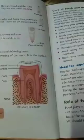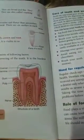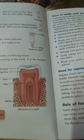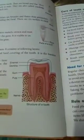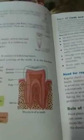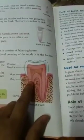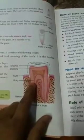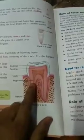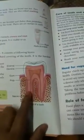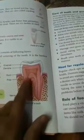Below that we have dentine — you can see it in the drawing. It is a bone-like layer below the enamel and it is softer than the enamel. And then we have the pulp — you can see it here. It is the central part of the tooth. It is soft and contains blood vessels and nerves.